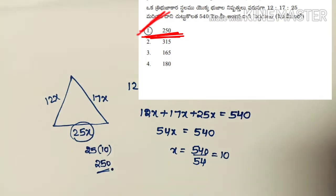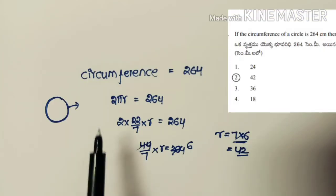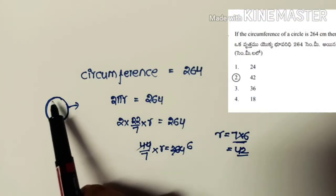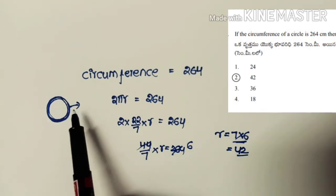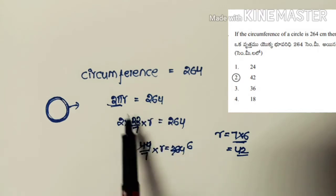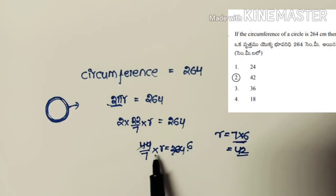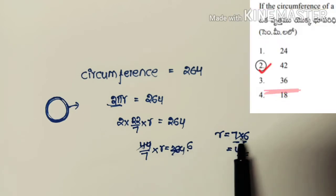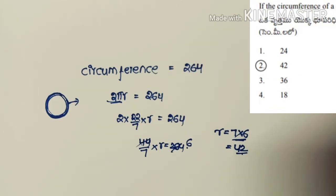Next problem: if the circumference of a circle is 264 cm, then its radius is — options include 42. Circumference = 2πr = 264. Using π = 22/7: (44/7) × r = 264, so r = 264 × 7 ÷ 44 = 42. So the radius is 42, which is the second option.